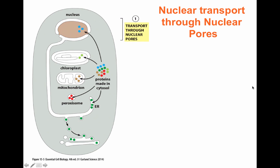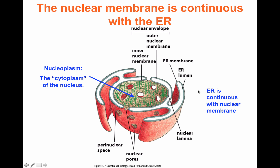We're going to start by looking at proteins targeted into the nucleus. The nucleus is an interesting organelle because it has a double membrane — an outer nuclear membrane and an inner nuclear membrane — and that membrane is continuous with the endoplasmic reticulum. It has an inside lumen that separates the environment of the cytoplasm on the outside from the nucleoplasm on the inside. To allow molecules to move to the outside and vice versa, there are nuclear pores.